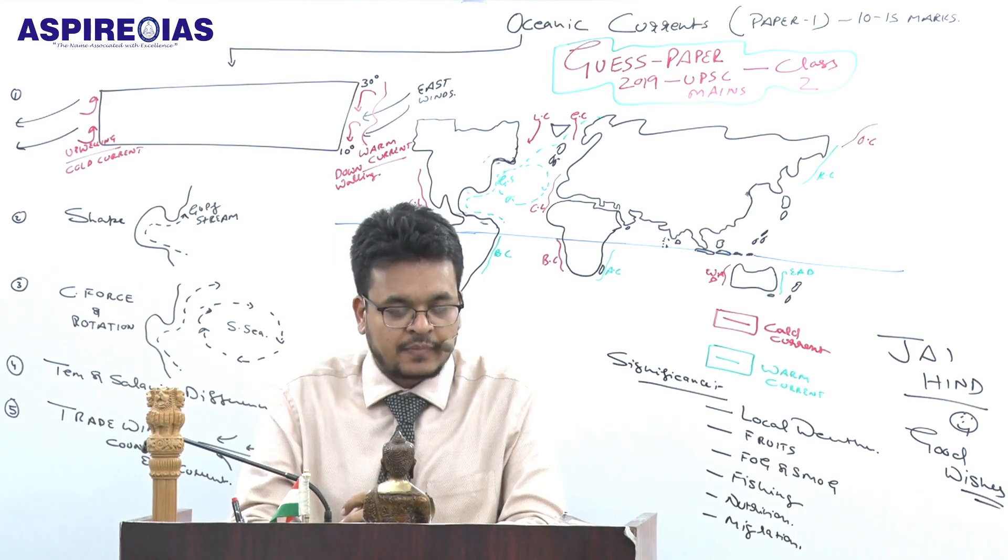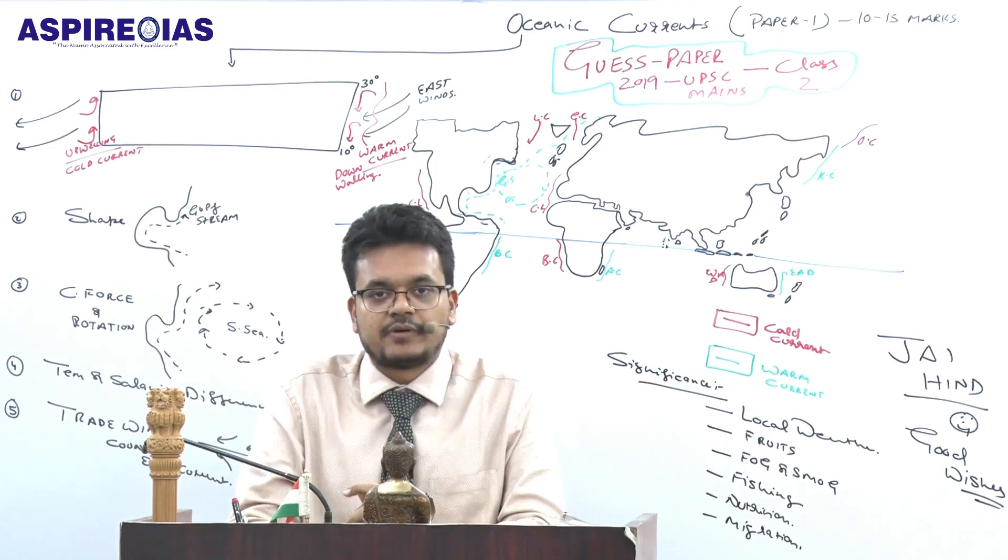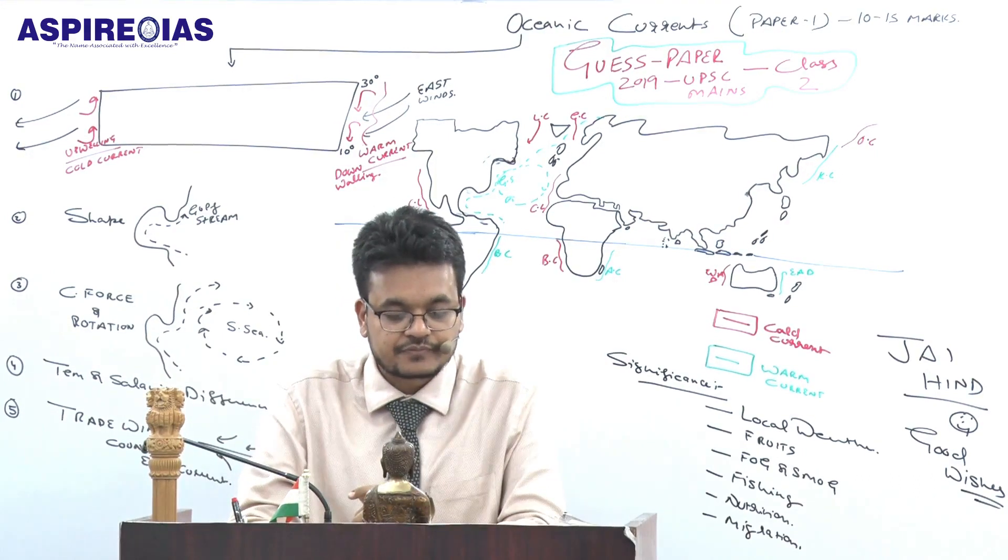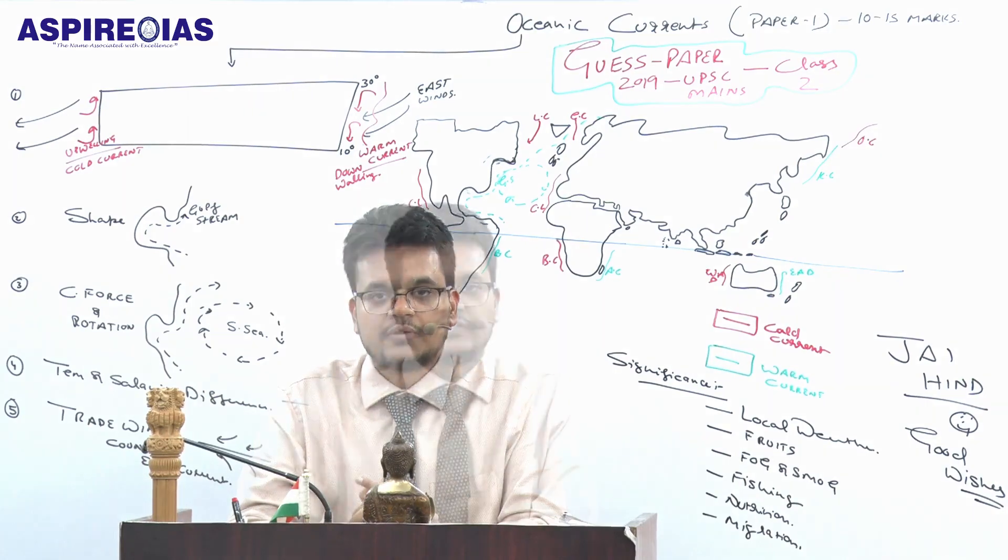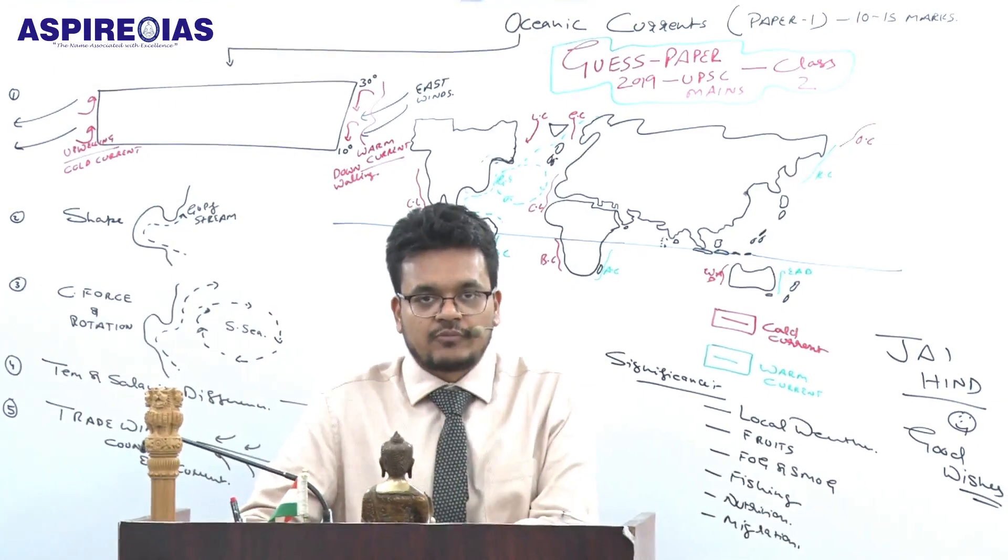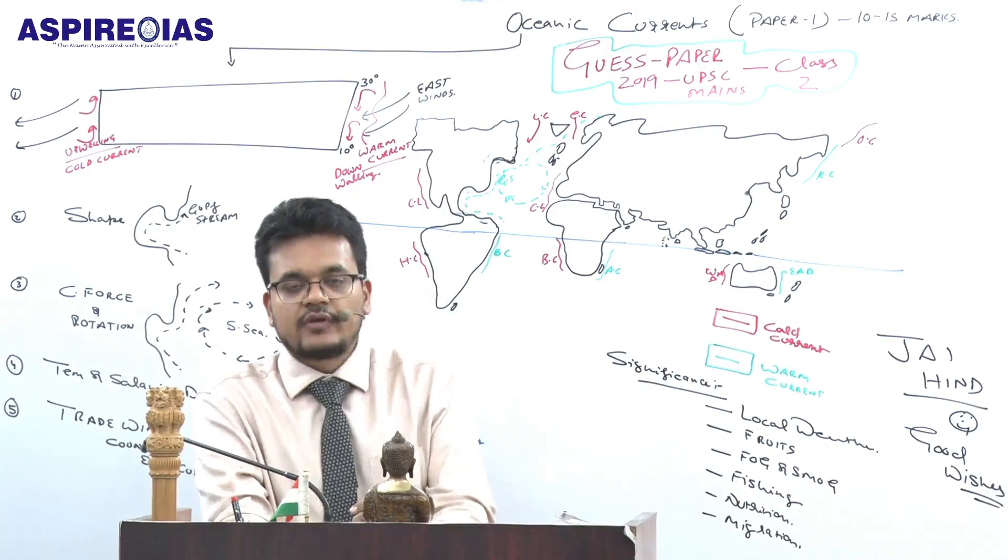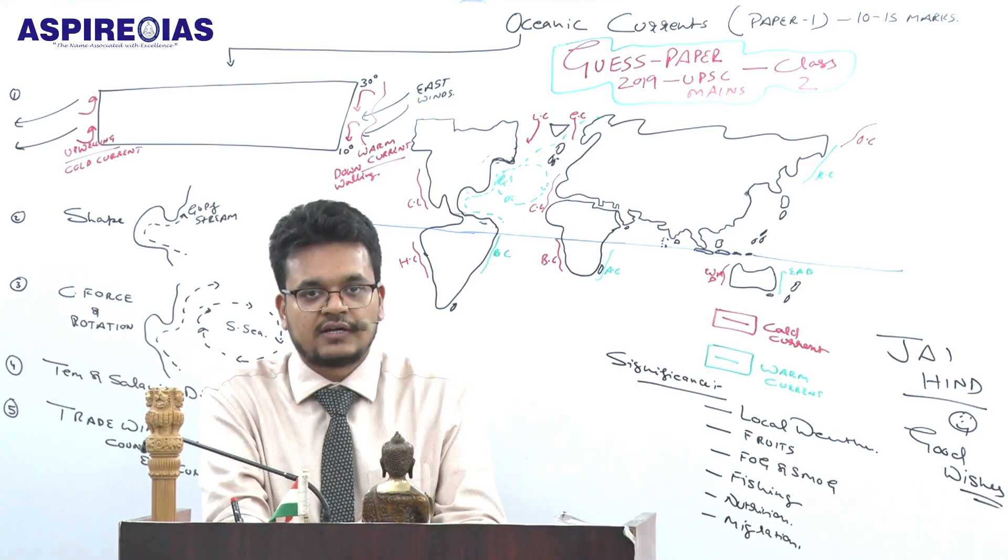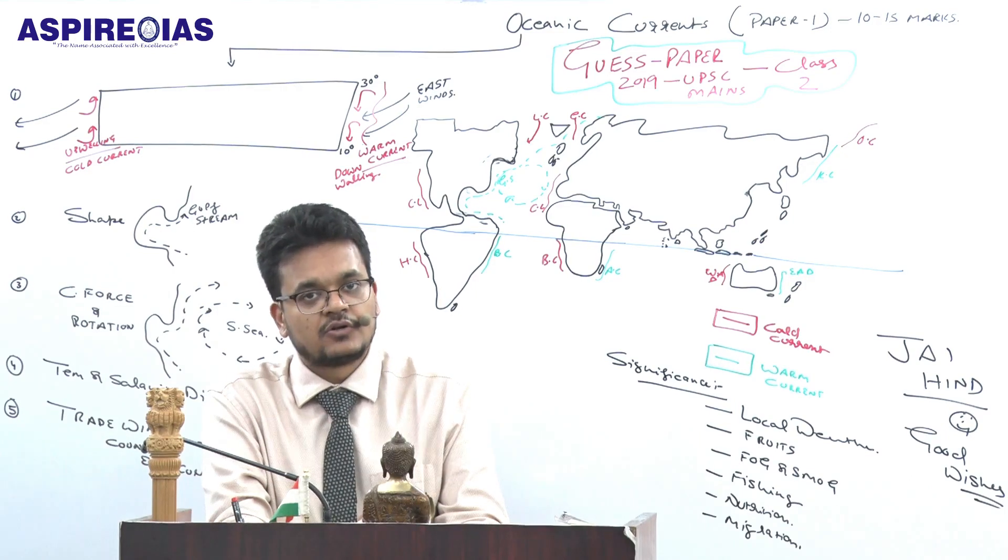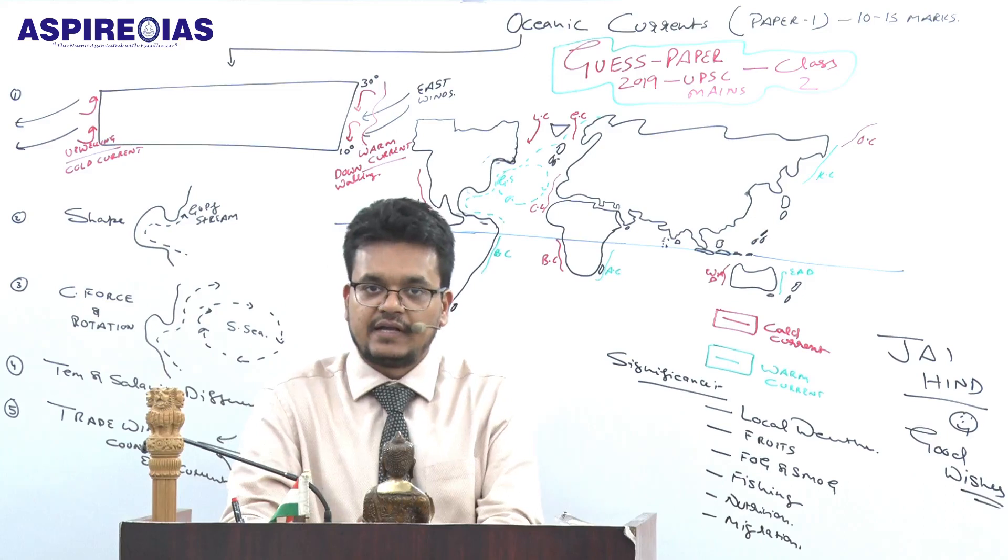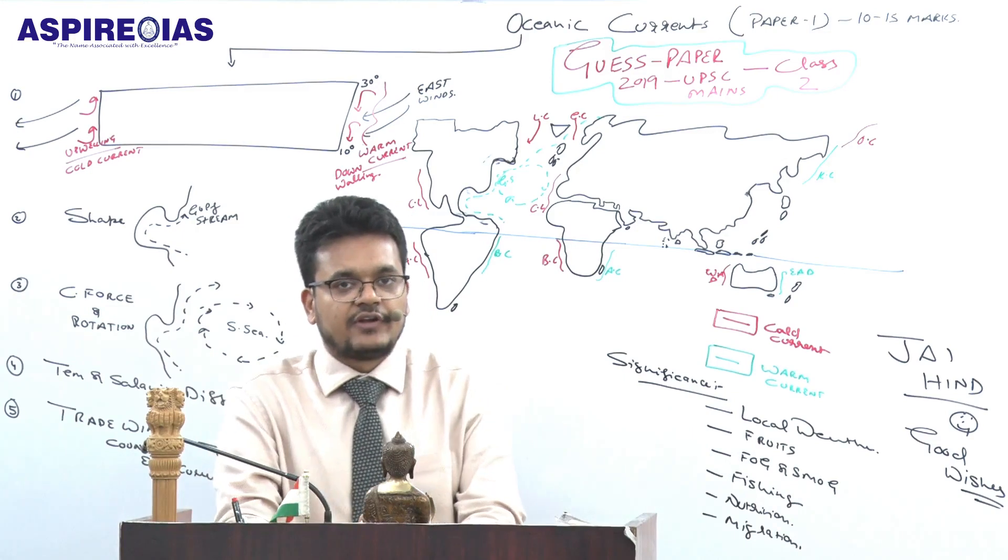Good morning friends, we are coming with a second session of guest paper for Mains 2019. We are starting with geography. In the last class we discussed automobile industry. Today we can discuss two topics: oceanic currents which is part of paper one, and motor vehicle act which is part of paper two governance. Both topics are important for prelims as well as mains.